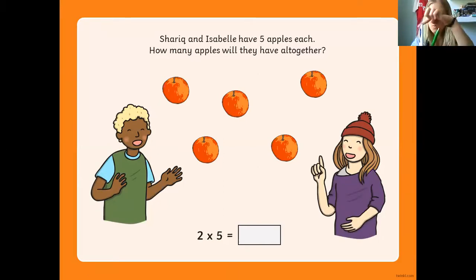So one, two, three, four, five, six, seven, eight, nine, ten. So altogether they're gonna have ten apples. Or what you could also do is two times five equals ten.